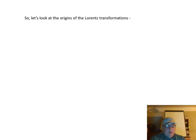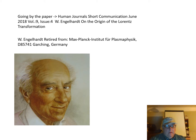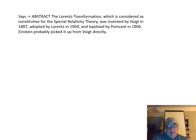Let's look at the origins of the Lorentz Transformations, going by a paper by Engelhard. The abstract says the Lorentz Transformation, considered constitutive for special relativity theory, was invented by Voigt in 1887, adopted by Lorentz in 1904, and baptized by Poincaré in 1906 — meaning Poincaré used it as well.